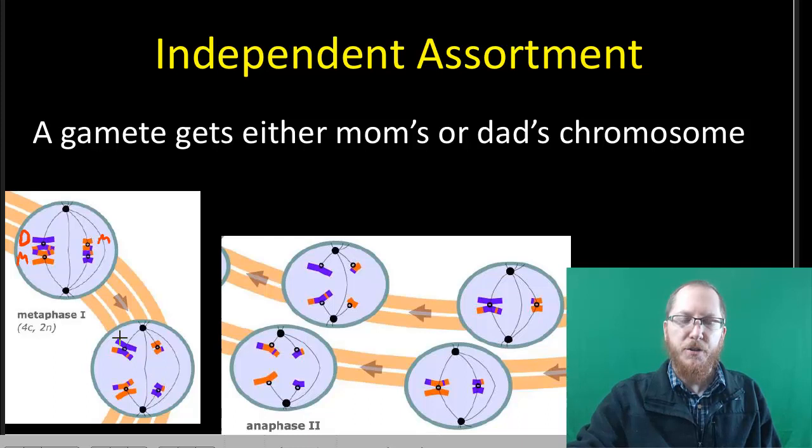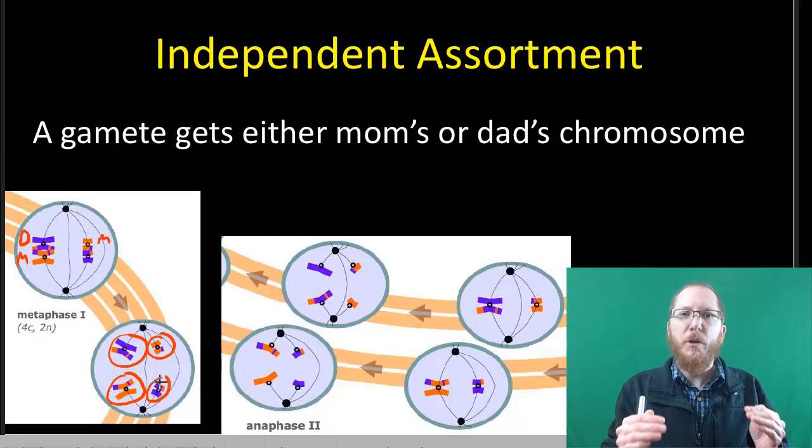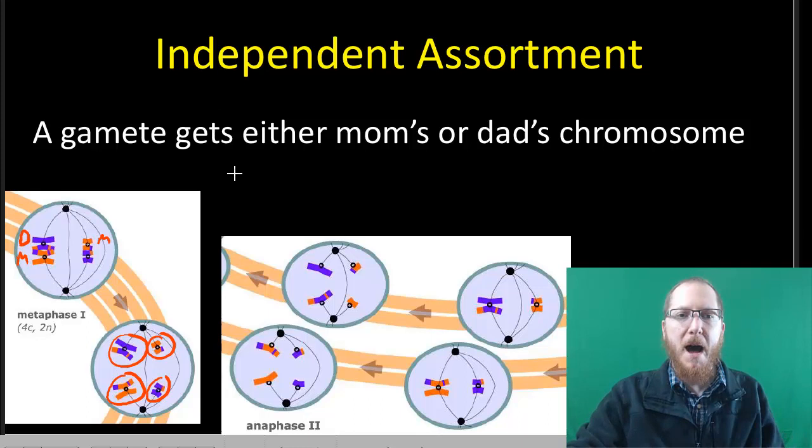You see that this cell up at the top is going to get dad's version of 1, mom's version of chromosome 2. The other cell is going to get mom's version of chromosome 1, dad's version of chromosome 2. If you look at an organism that has 23 different types of chromosomes like us, you can get a lot of different variation based upon which one you get, mom's or dad's, for each of those 23.